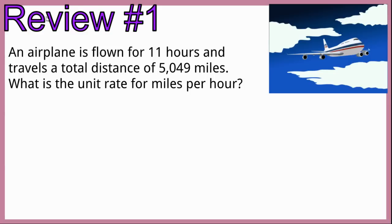Review problem number one. An airplane is flown for 11 hours and travels a total distance of 5,049 miles. What is the unit rate for miles per hour? Think to yourself and read the problem twice. An airplane is flown for 11 hours and travels a total distance of 5,049 miles. What is the unit rate for miles per hour?